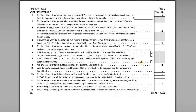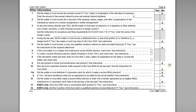The last section to complete on the 1041 is the other information section. In this case all answers were no — the trust is not a specified domestic entity, it's not a foreign trust, we didn't have any interest in foreign bank accounts, and so on. Read each question carefully; if it applies, check yes and include any additional required attachments.